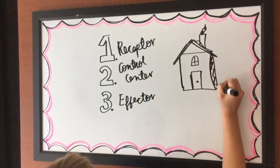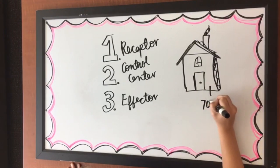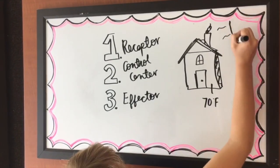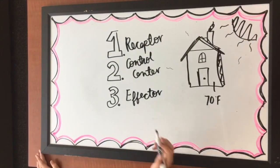To simplify this, think of a house. Say the thermostat is set at 70 degrees, but the house temperature raises to 75 degrees because it's hot outside.